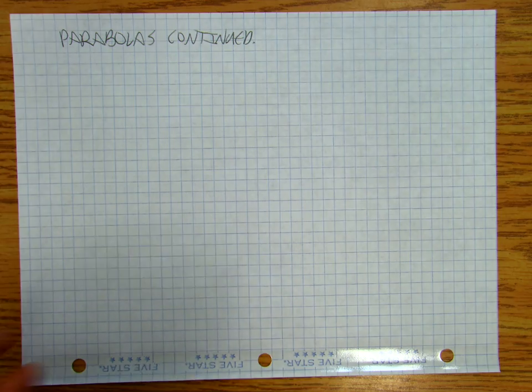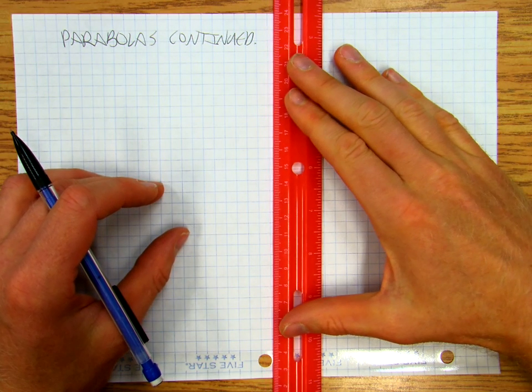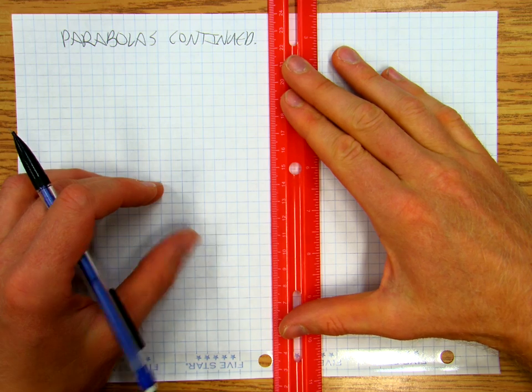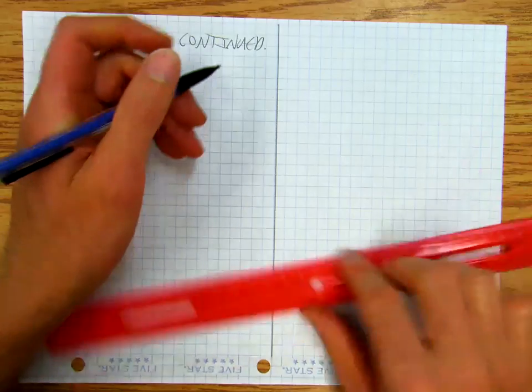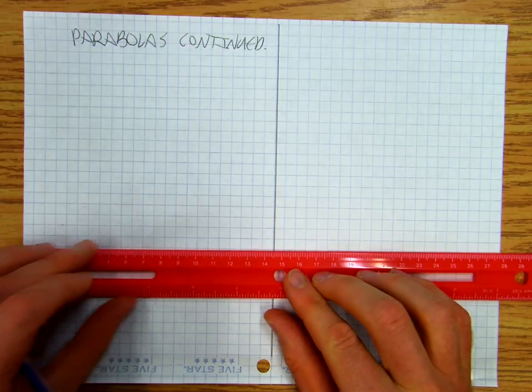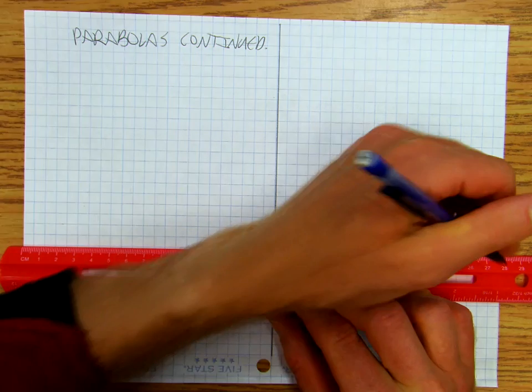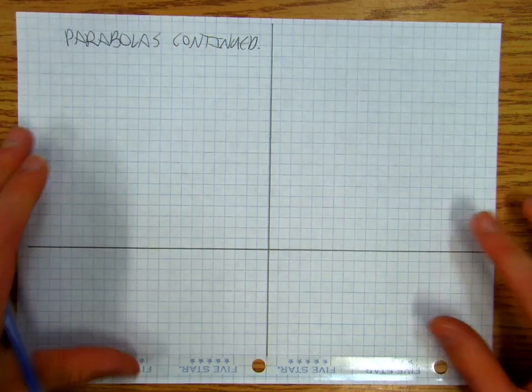And so right now we're on graph paper, before I wasn't on graph paper, and so what we're going to do is we're going to make a set of axes. Okay, so we've got a set of axes.